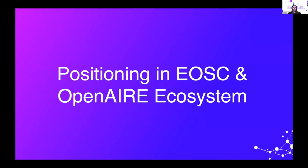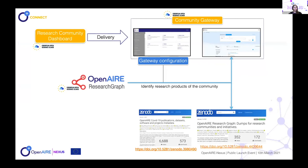Regarding our position in the OpenAIRE ecosystem: the Research Community Dashboard is a service registered in the EOSC catalog. Thanks to it, we can deliver community gateways which are also registered in the EOSC catalog. The most important service for the gateways is, of course, the OpenAIRE Research Graph.